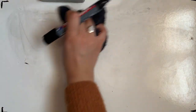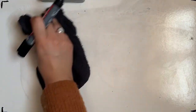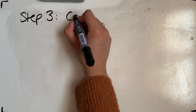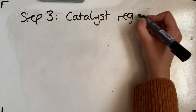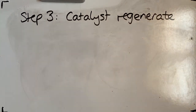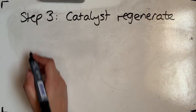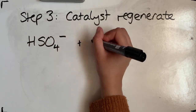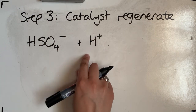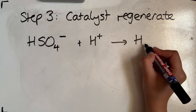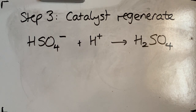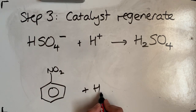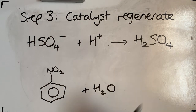A catalyst speeds up the reaction but cannot be used up overall. Step three is catalyst regeneration — we regenerate the sulfuric acid catalyst. In step one we made HSO₄⁻, and in step two we released H⁺. These two combine to give sulfuric acid again. Overall, we have made nitrobenzene, formed water in step one, and regenerated the catalyst in step three.